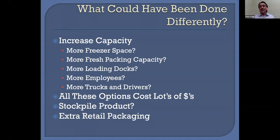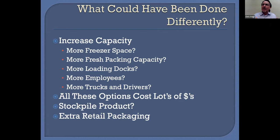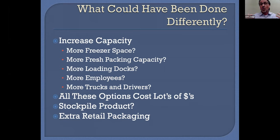One of the things we all learned is that we need extra retail packaging. If 90% of your business is food service and only 10% is retail, and you have to go through a big shift, probably the cheapest and easiest thing you can do is have an extra supply of retail packaging. Even our french fry manufacturers who wanted to package for retail couldn't even get the packaging — there was such a shortage because everybody was transitioning from food service to retail sales at the same time. So maybe stockpile shelf-stable products and have some extra packaging on hand.